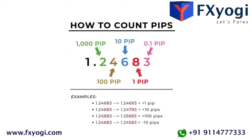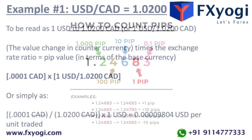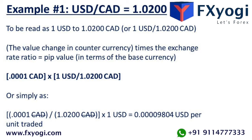In the following example, we will use a quote with four decimal places. We are using the USD and the Canadian dollar currency pair at the rate of 1.0200, to be read as one USD to 1.0200 Canadian dollar — or one USD per 1.0200 Canadian dollar.